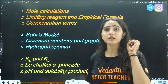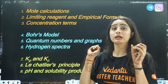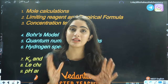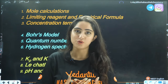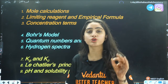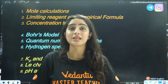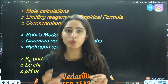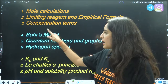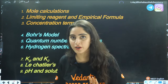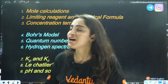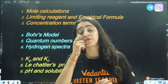Second is from structure of atom: Bohr model numericals, quantum numbers, graphical questions on radial and angular probability curves. Next is hydrogen spectra — formula-based questions, and complicated questions based on N1 and N2 transitions between Lyman, Balmer, Paschen and other series. Last but not least from structure of atom is electronic configuration, which forms the basis of inorganic chemistry and will be useful throughout your chemistry preparation.